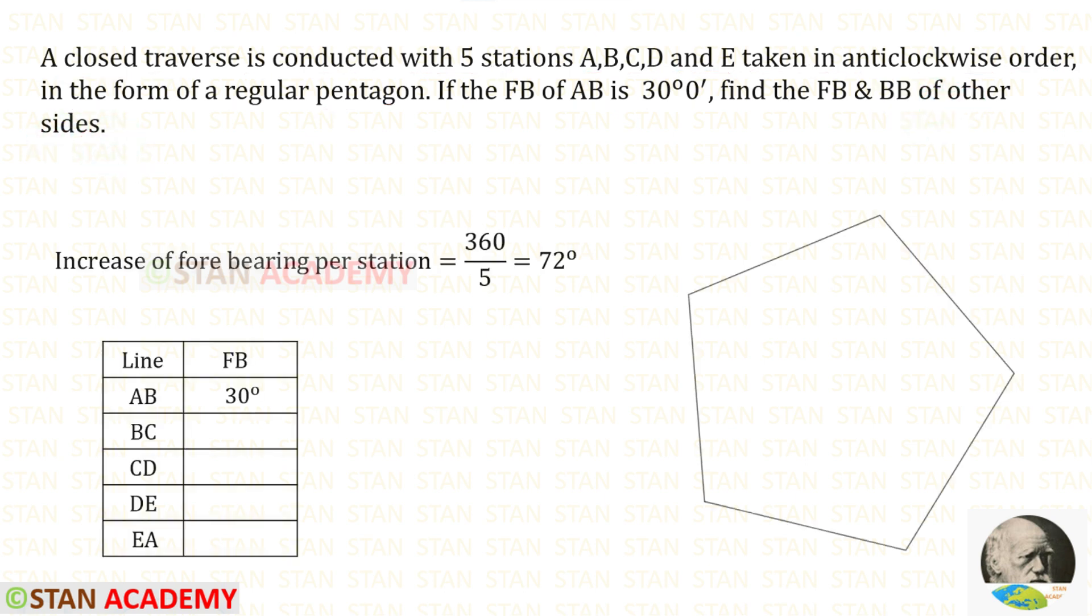As per the question, the pentagon is running in the anticlockwise order. We can easily find the increase of forebearing per station. There are totally five stations.